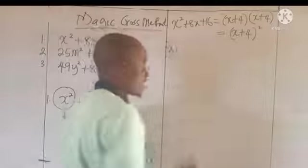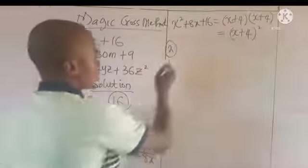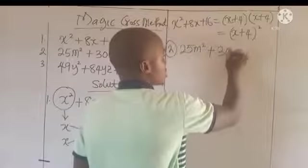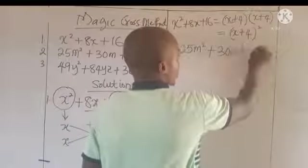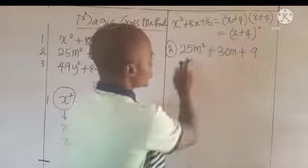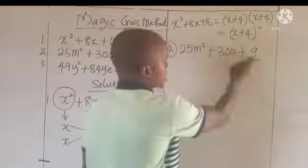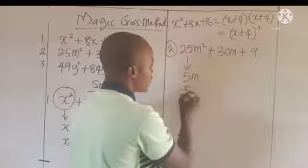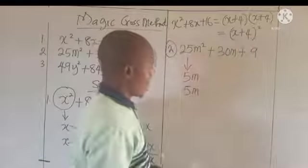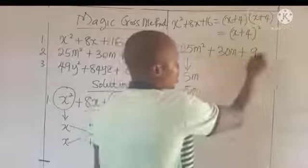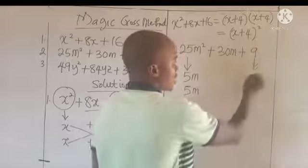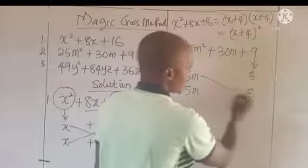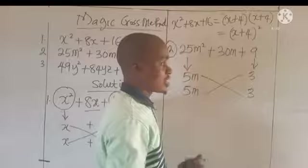Now let's go to the second one — you can see it is very simple. We have 25m squared plus 30m plus 9. The same thing we are going to do: we look at the first term and the last term, and try to split each into two factors. We get 5m and 5m, because 5m times 5m gives us 25m squared. For the last term, we get 3 and 3, so that 3 times 3 gives us 9. Now let's use our magic cross.